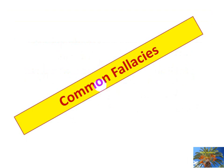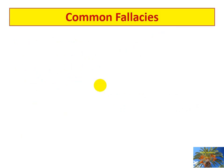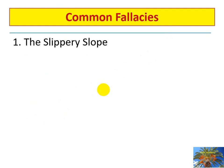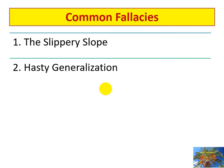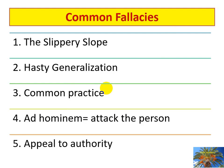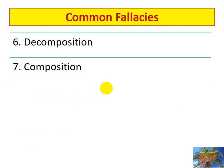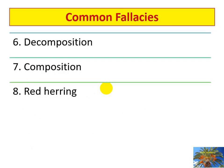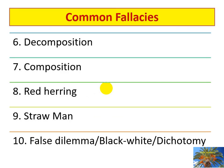Now let's deal with some common fallacies in real life — not only in academic life, but also in the media, in the street, everywhere. The ten fallacies we'll cover are: (1) Slippery Slope, (2) Hasty Generalization, (3) Common Practice, (4) Ad Hominem or Attack the Person, (5) Appeal to Authority, (6) Decomposition, (7) Composition, (8) Red Herring, (9) Straw Man, and (10) False Dilemma — also called Black and White or Dichotomy fallacy.